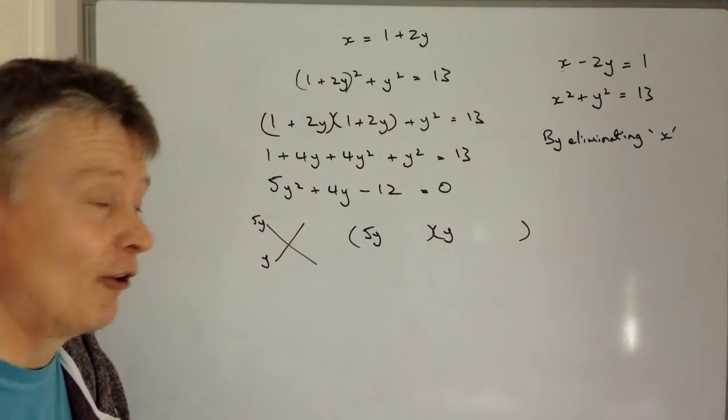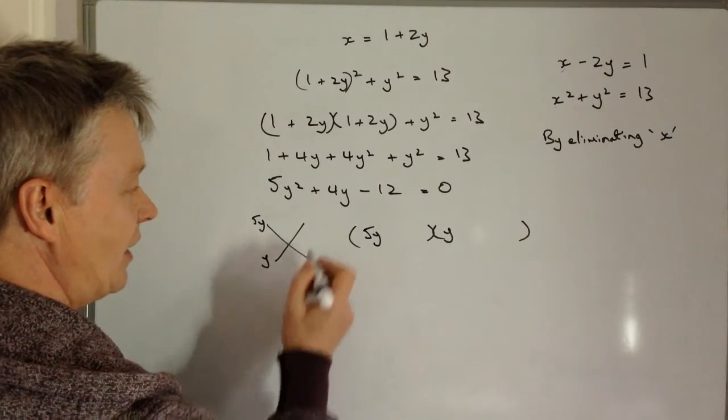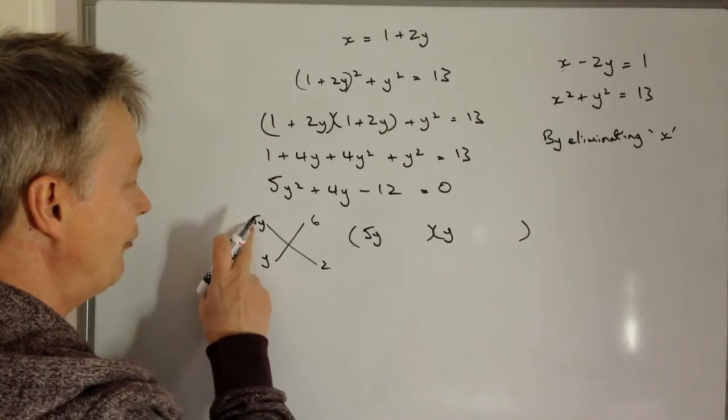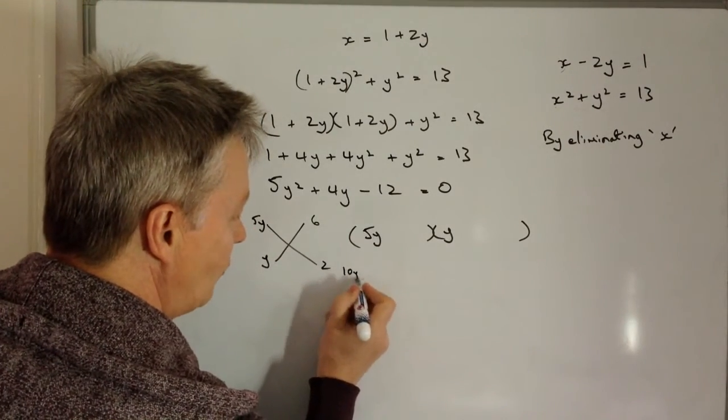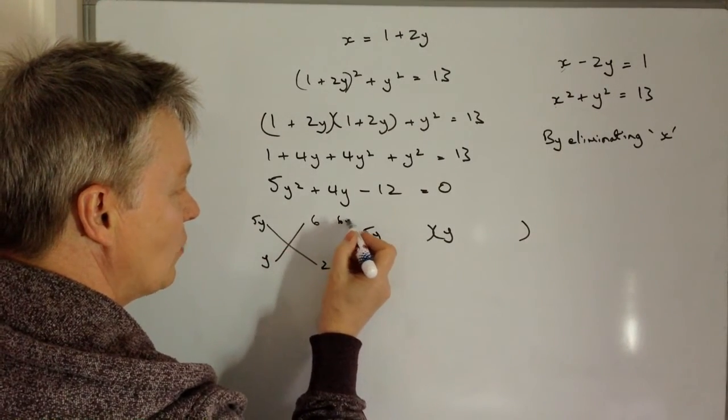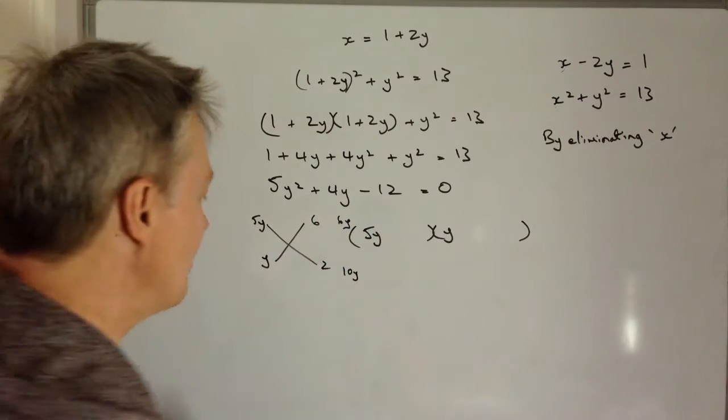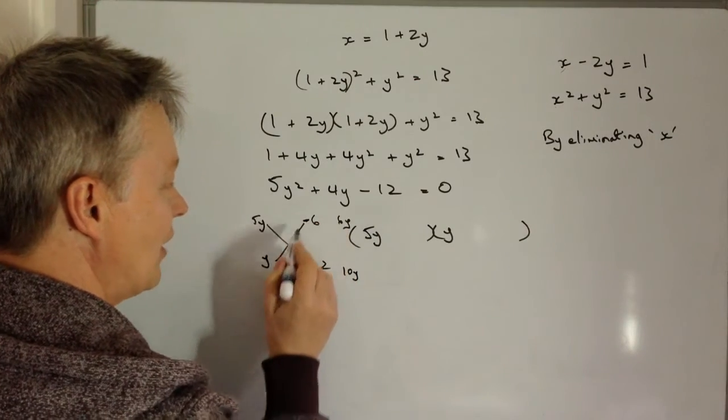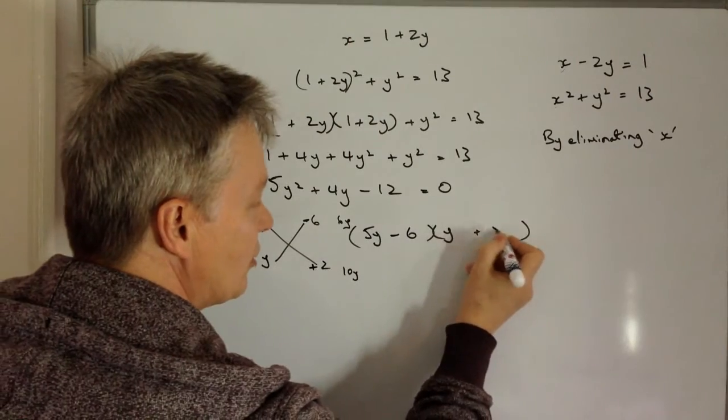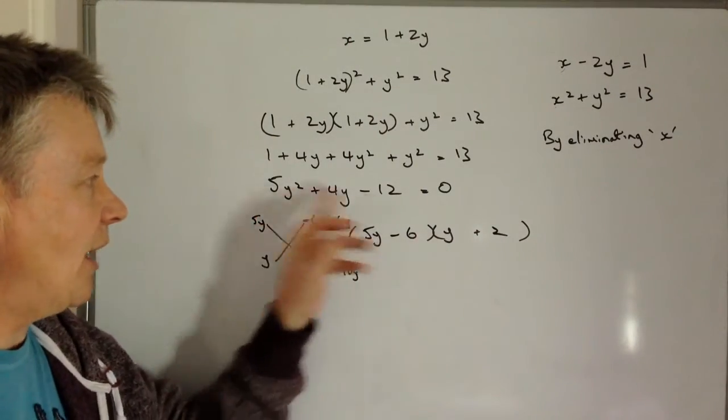So if I made that, let's say 6 and 2, the reason I would choose that is because I know 5Y times 2 is 10Y, and Y times 6 is 6Y. So 10Y minus 6Y will give me 4Y. So really, this means then I can put a minus in there because minus 6 and that becomes plus 2. You could check that, work it through, make sure I'm accurate with that.